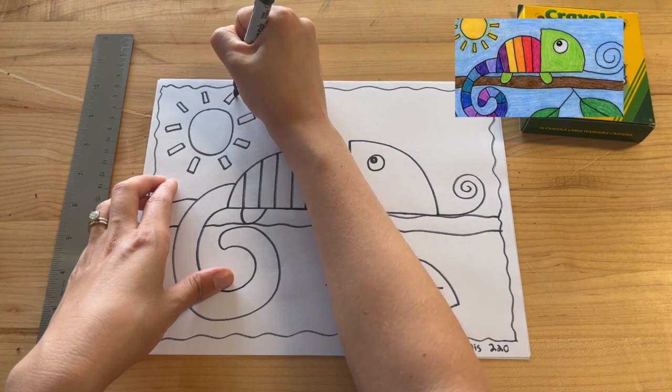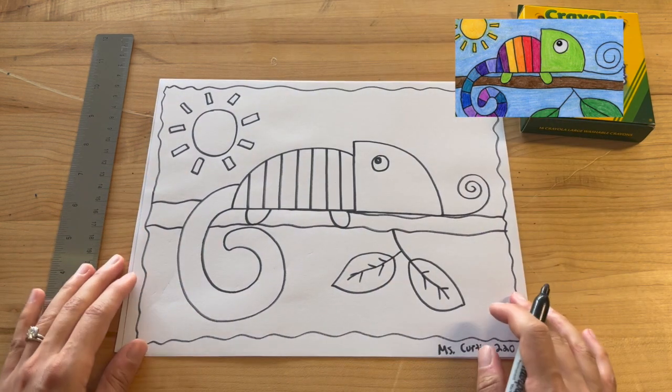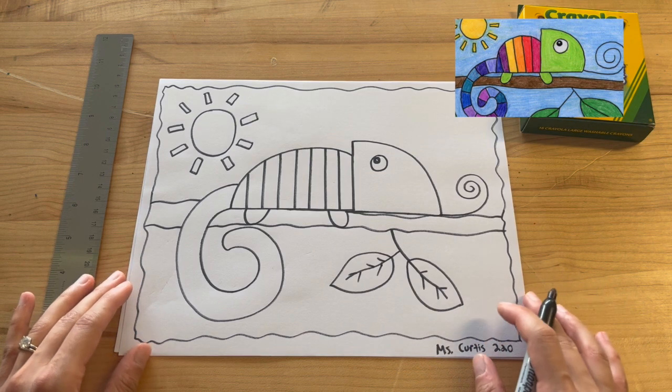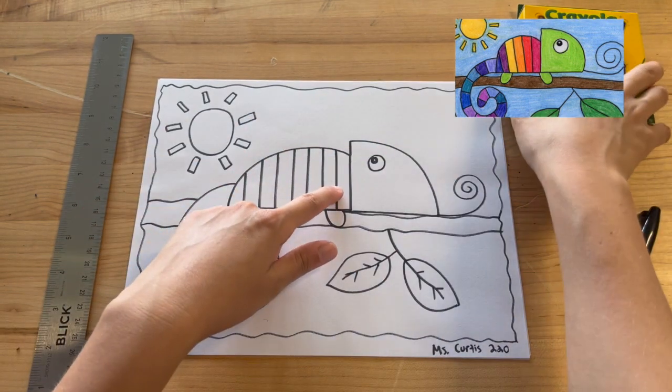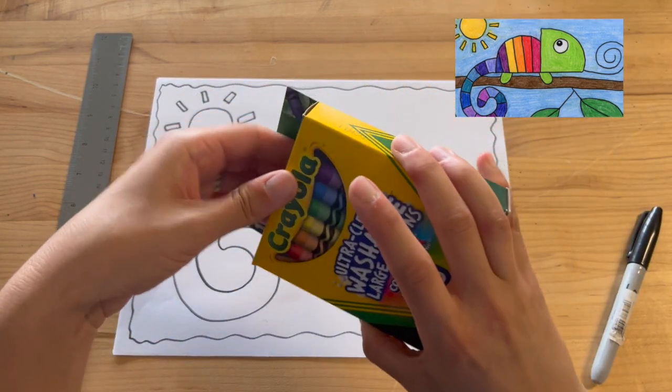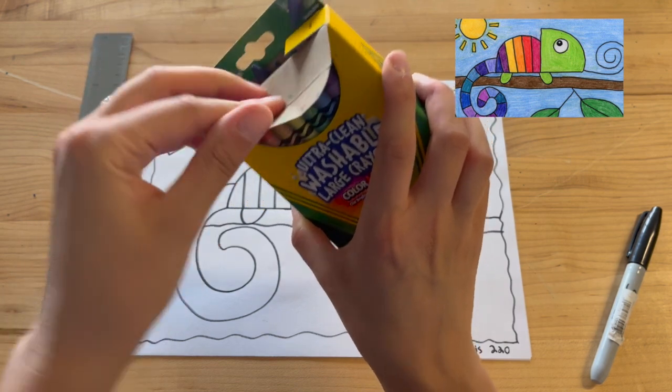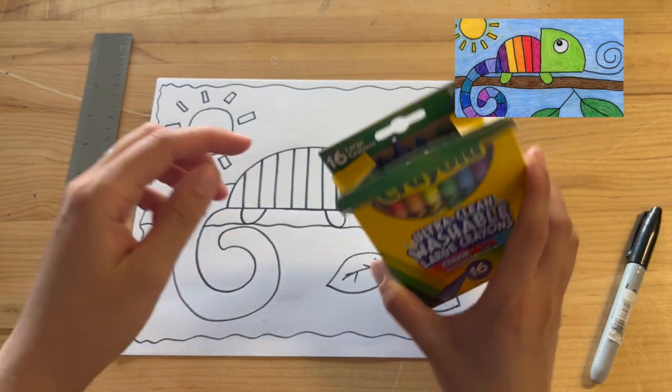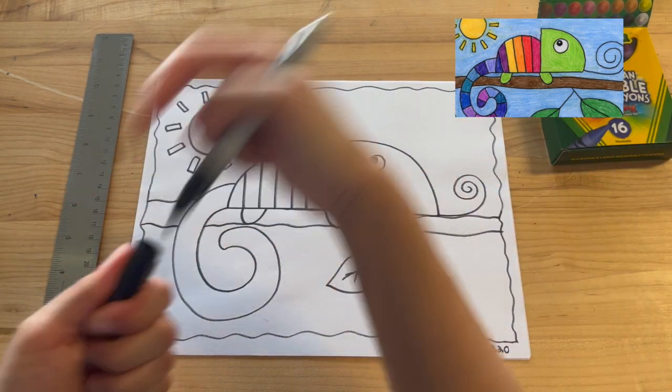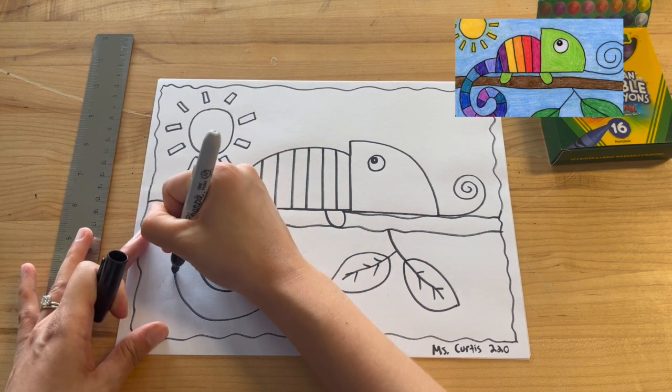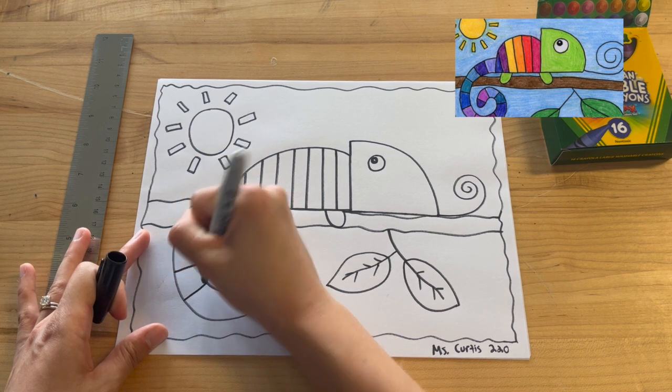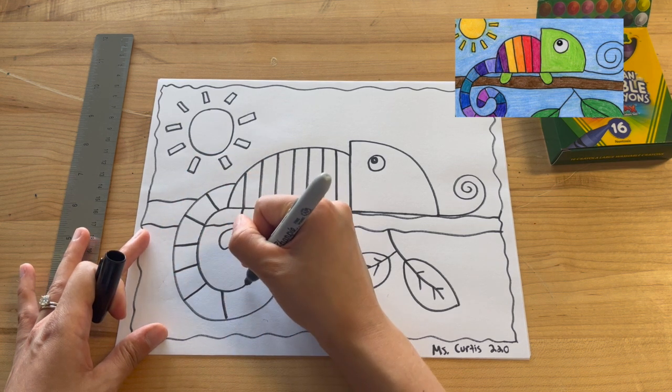Now once we finish this, we can start to add some color. So I am going to start to color this in. I'm going to use crayons today. So like I said, the middle of the body of this lizard is going to be a rainbow shape all the way going down through the tail. And you can even add some lines through the tail because we're going to color in those different colors as well. And then I'm going to show you how we're going to do that.